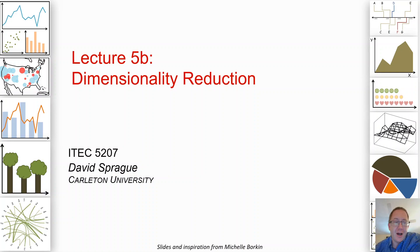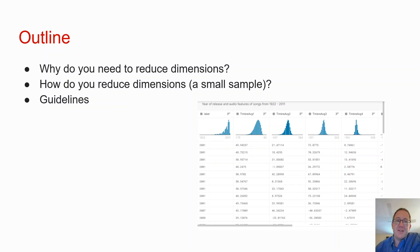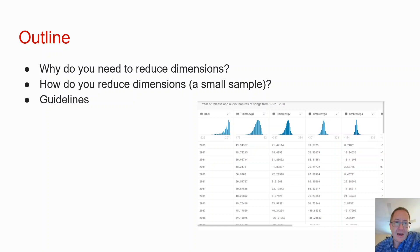How do you reduce dimensions, and why do you need to? One reason is you might want to display on screen. Another is you might want to find patterns — that's part of machine learning as well. This dimensional scaling is part of what a lot of machine learning algorithms do. More importantly, how do people interpret these data, and do they trust what's happening?